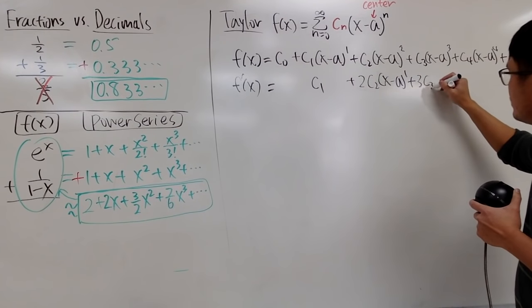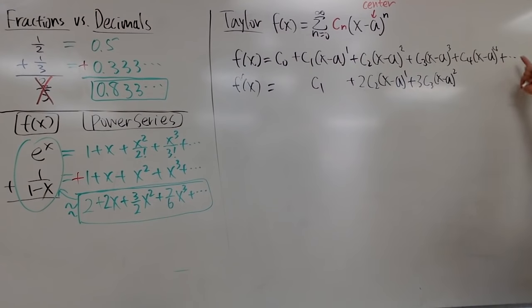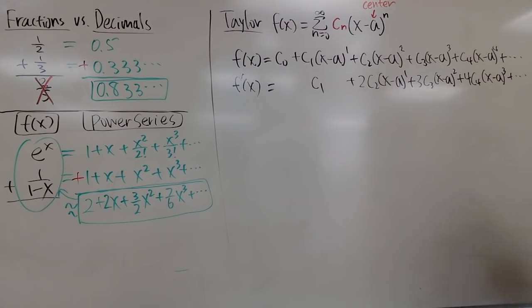And you do the same thing. Bring the 3 to the front. 1, 3c3, x minus a to the second power. And then bring the 4 to the front. So you have 4c4, x minus a to the third power, and so on, so on, so on. So that's cool.